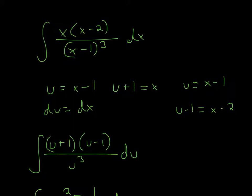So u is equal to x minus 1. We take the derivative of that, so du is equal to dx. The derivative of x is just 1 dx. But the thing is, we can't have two variables.